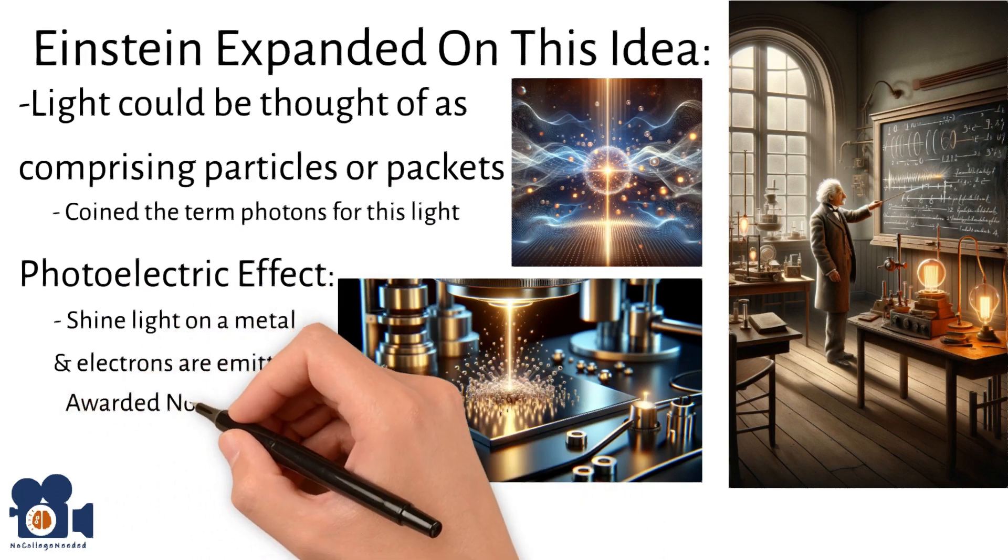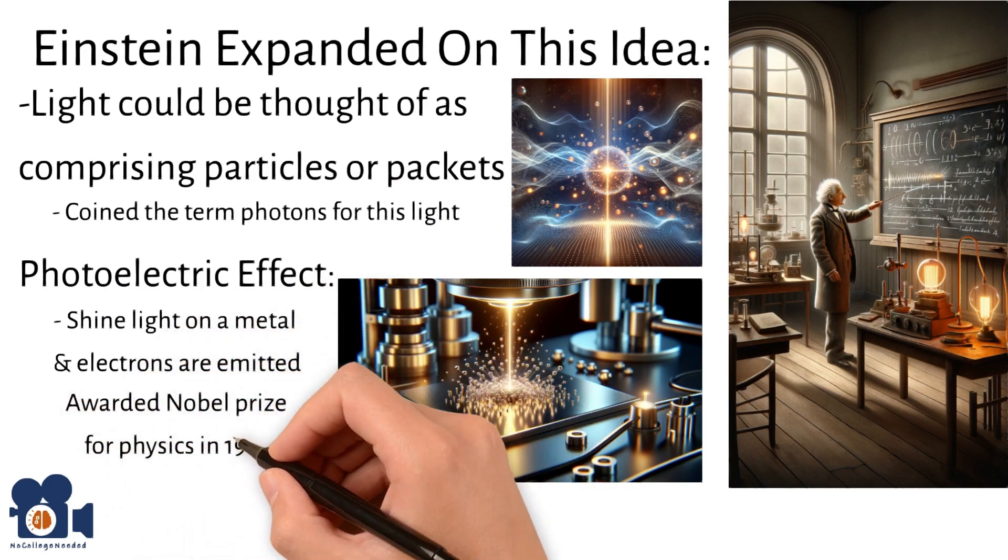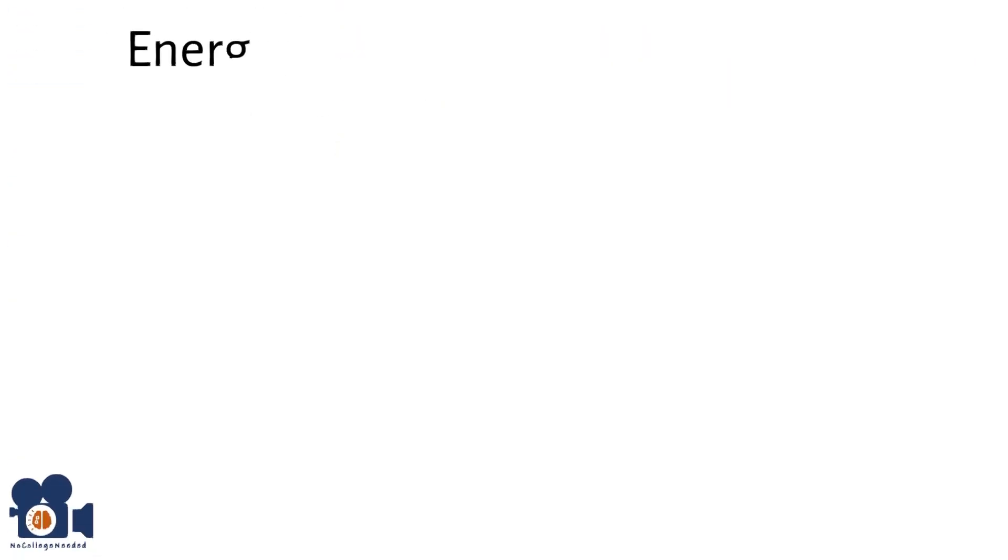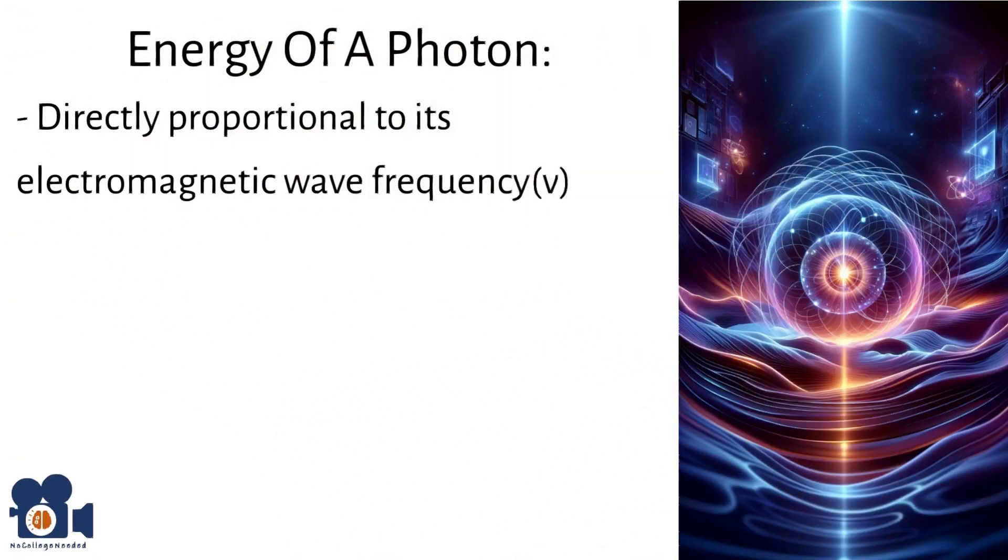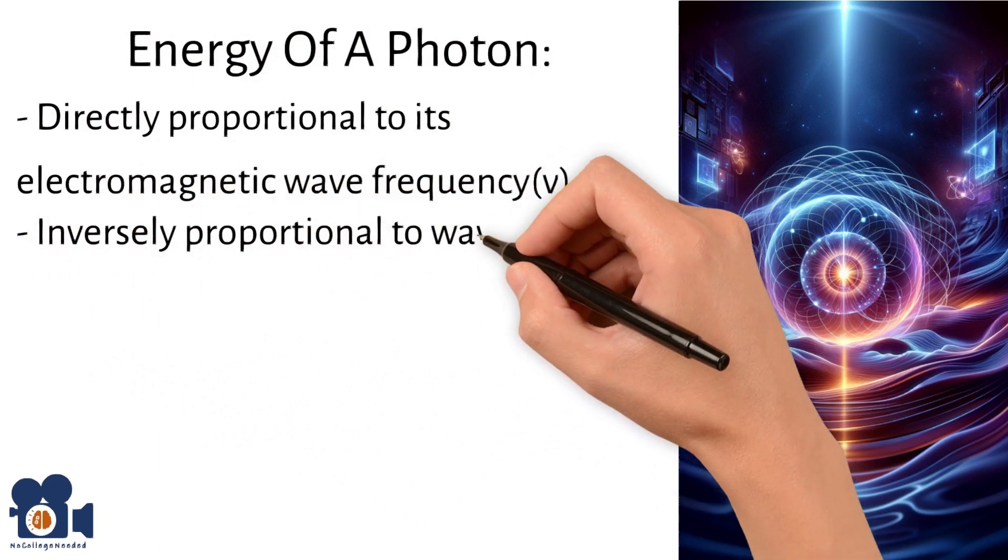For this discovery, Einstein was awarded the Nobel Prize for Physics in 1921. The energy of a photon is directly proportional to its electromagnetic wave frequency and inversely proportional to its wavelength.